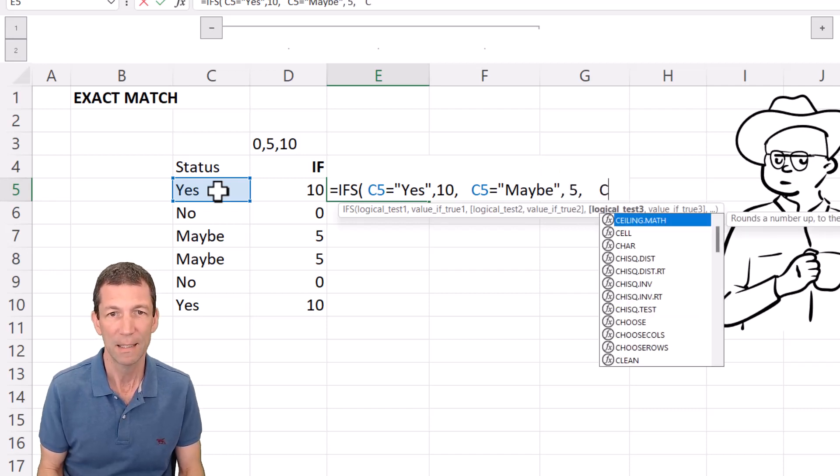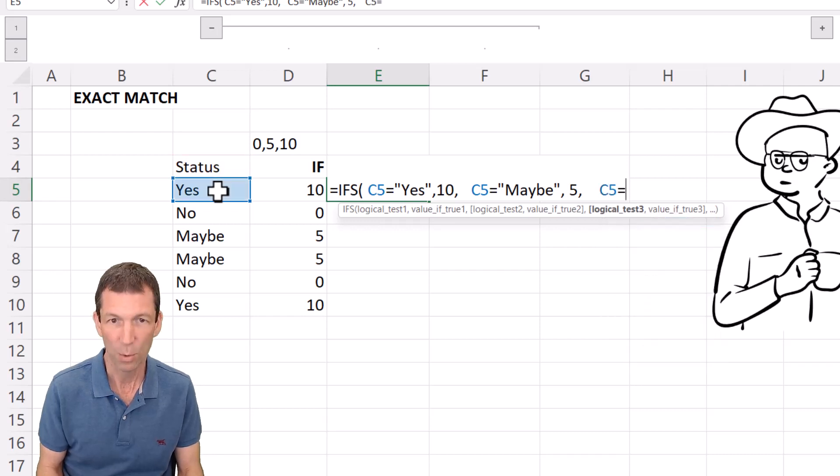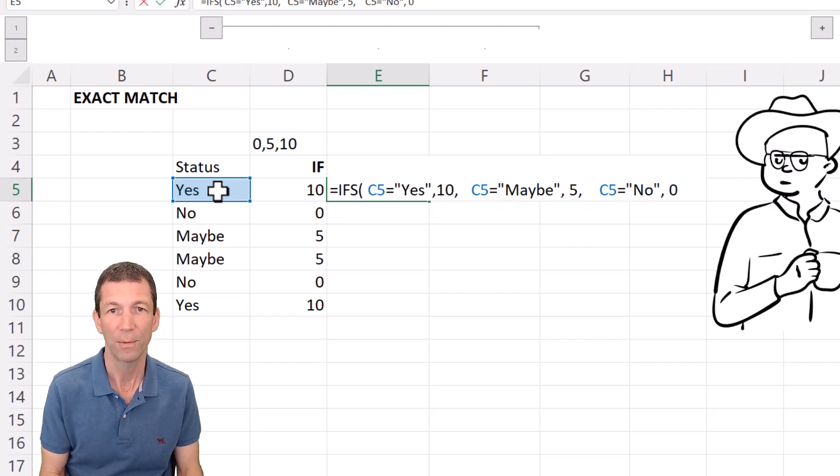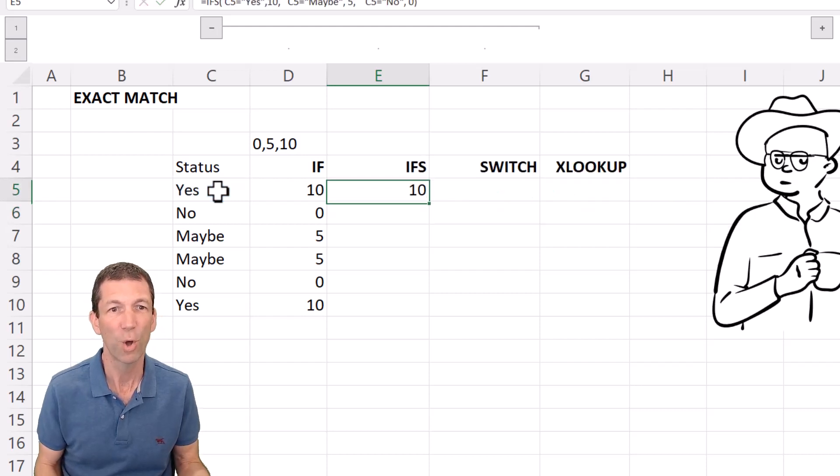And c5 equals no, then 0. Okay so not lots of different brackets and you can copy this formula down. Great.